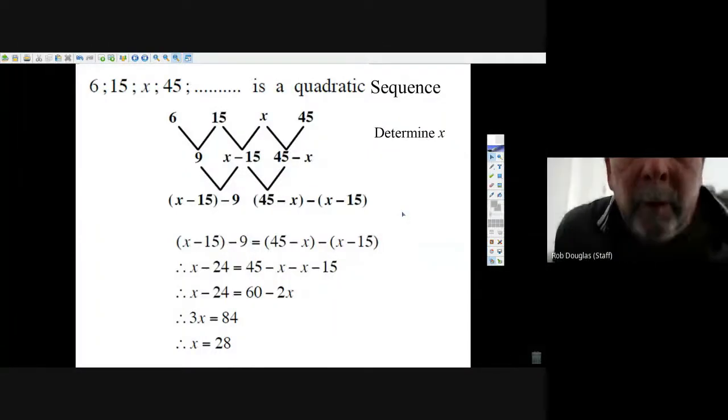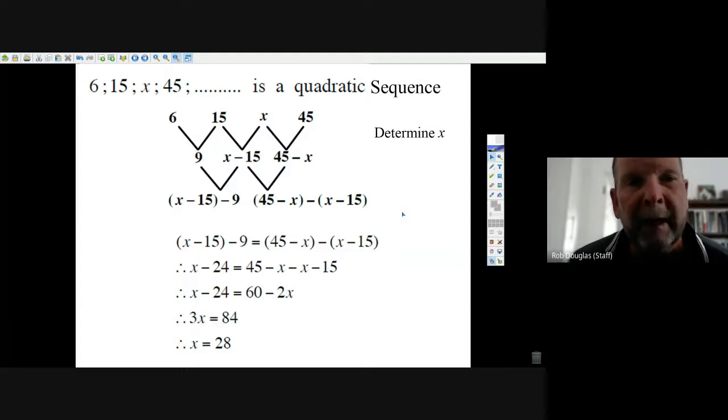Okay, we're going to look at one more question where they give you a quadratic sequence but with an x value instead of a number. You still arrange the terms: the first term, the second term, but the third term is x and the fourth term is 45.